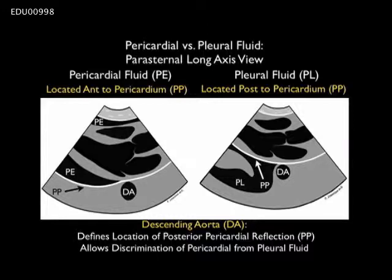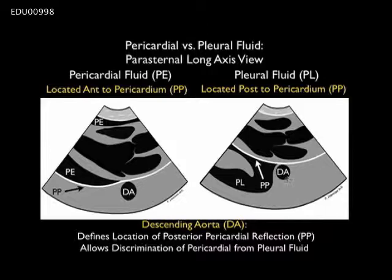This illustration reinforces the difference between pericardial and pleural effusion from the parasternal long axis view. In the left image, fluid layers out anterior to the descending aorta and posterior pericardial reflection — therefore within the pericardial sac. In the right image, the fluid is posterior to both the descending aorta and the posterior pericardial reflection, and therefore within the pleural cavity. These are very important landmarks when trying to figure out if fluid is pericardial versus pleural.